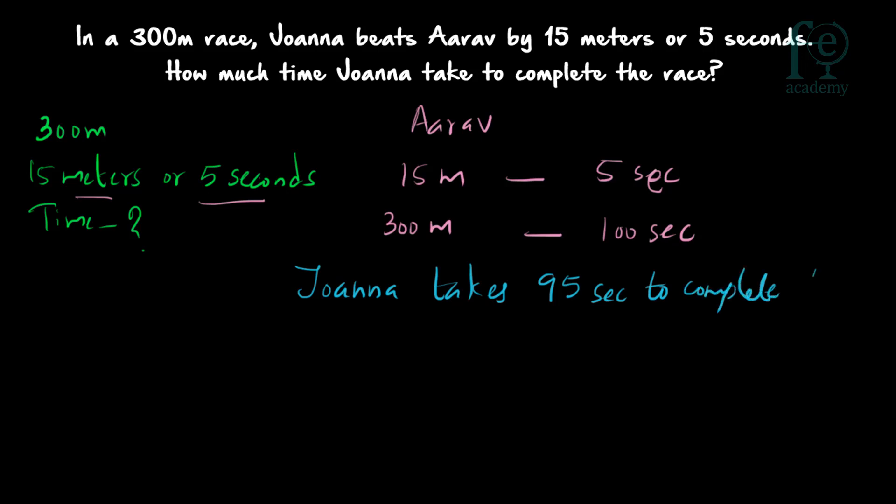So here, when both the distance and time are given, you can easily match them. In order to cover 15 meters, Adav takes 5 seconds, and from that you can find out the entire time taken by Adav. It is already given that Joanna beats Adav by 5 seconds, so Joanna will be taking 5 seconds less. The total time taken by Joanna will be 95 seconds to complete the race. Thank you for watching.